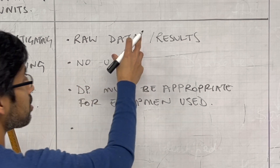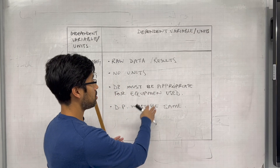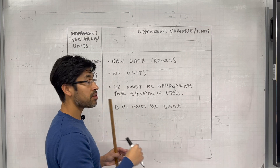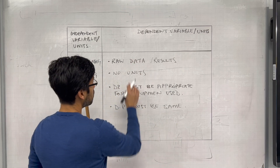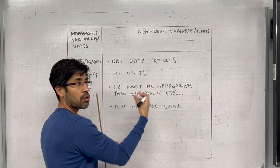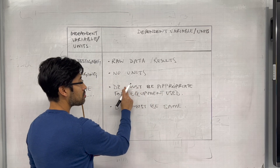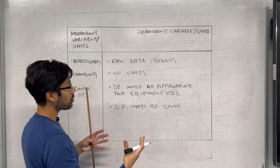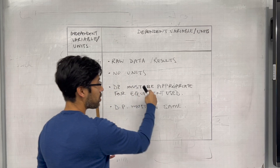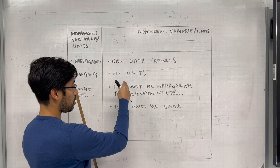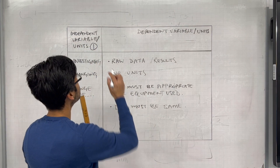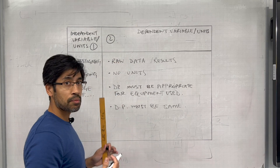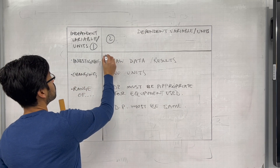The other thing about decimal places is that they must be consistent — decimal places must be the same. It doesn't matter if you've measured something 10 centimetres cubed and something else 11.5; you must write 10.0 and 11.5. So decimal places are first determined by the equipment you're using, and secondly, once you've got that number of decimal places, it must be consistent for all the data. The first most important part of our table is the independent variable, second is the dependent variable, and then the main body of the table — that's number three.